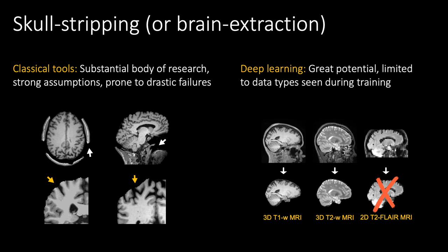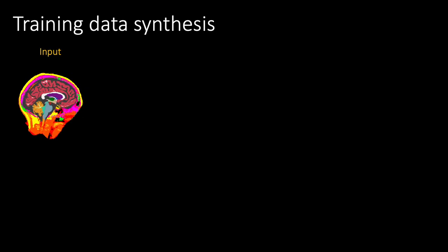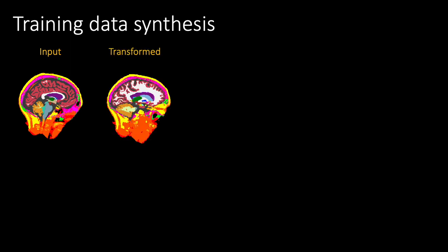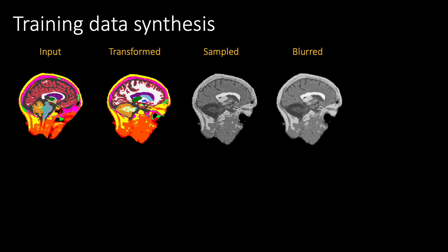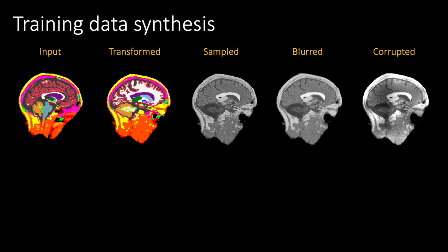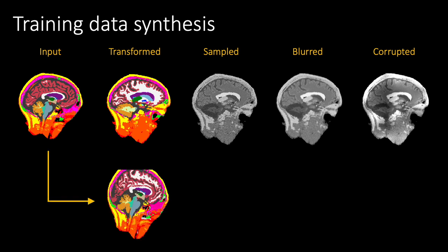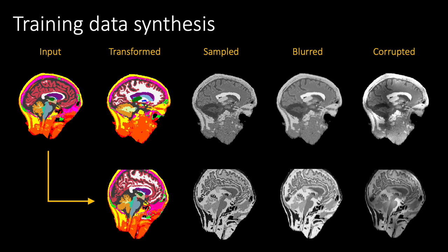To benefit from the great potential of learning-based methods while addressing the requirement for a diverse training dataset, we make use of a strategy that encourages a model to generalize across any image type by synthesizing arbitrary training data from pre-computed whole-head segmentations. To generate an arbitrary brain image from a segmentation map, we first simulate spatial variability by applying a random non-linear transform, then sample voxel values from random Gaussian distributions that correspond to each segmentation label, and further apply random spatial blurring, downsampling, and a set of image corruptions to produce our final training image. With this method, we can produce very different training images from a single initial source segmentation.